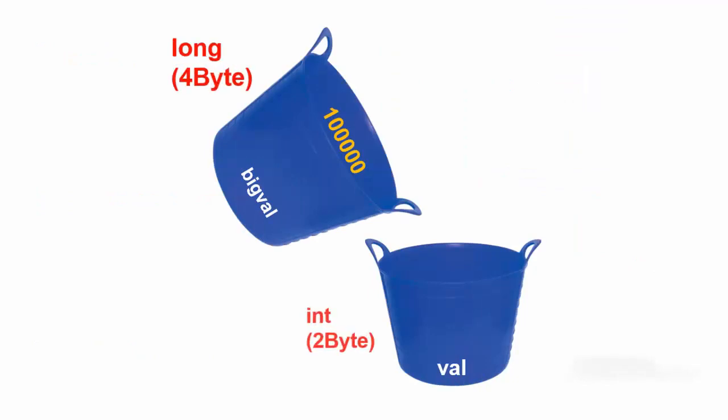Simply stated, this statement grabs the variable bigVal bucket and tries to pour four bytes of data into a two byte bucket. Doing this runs a risk of losing two bytes of information because variable val's bucket is too small to hold all of the variable bigVal's data.